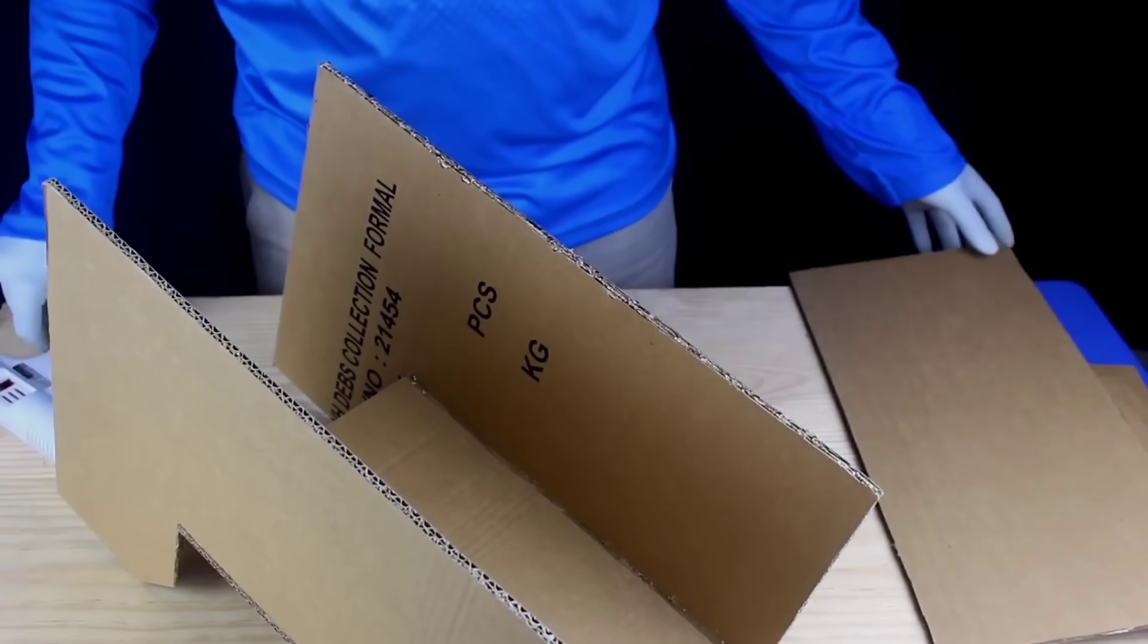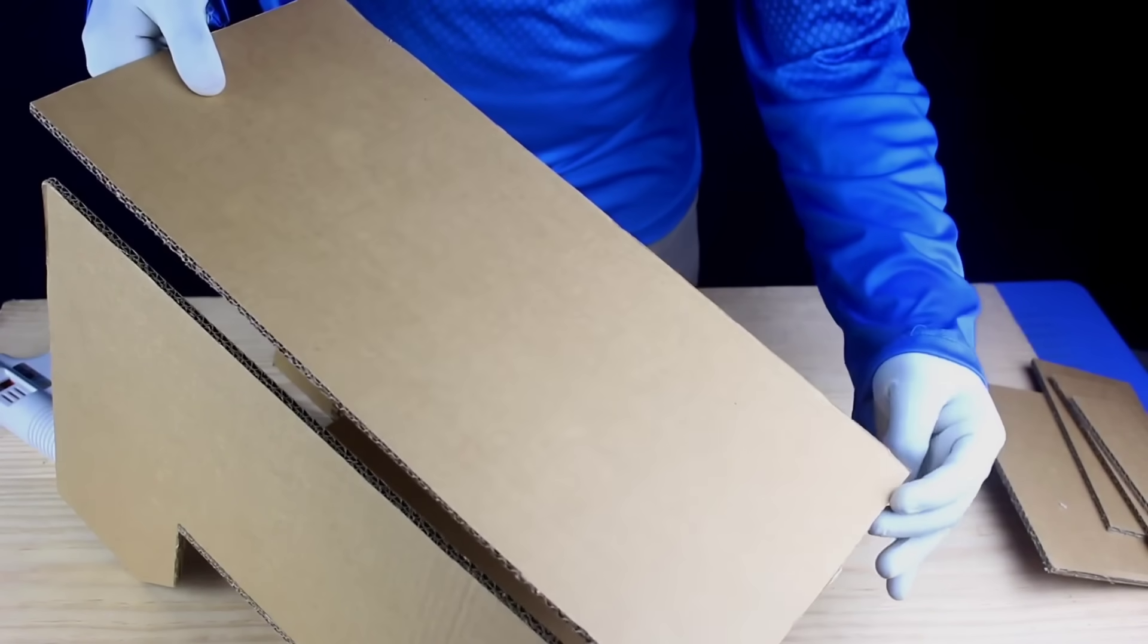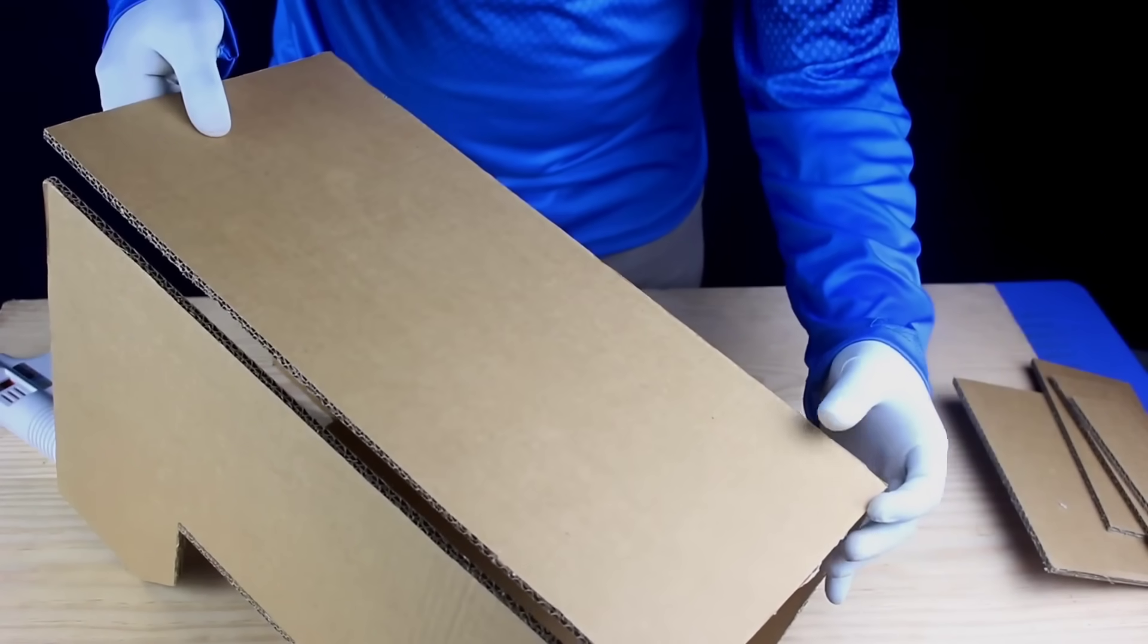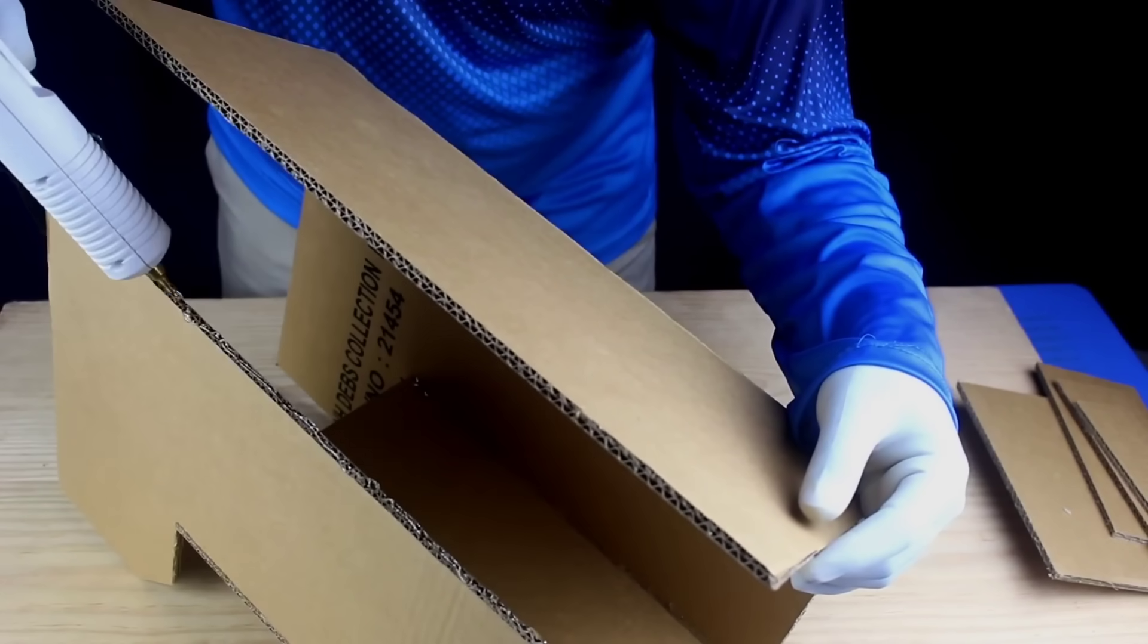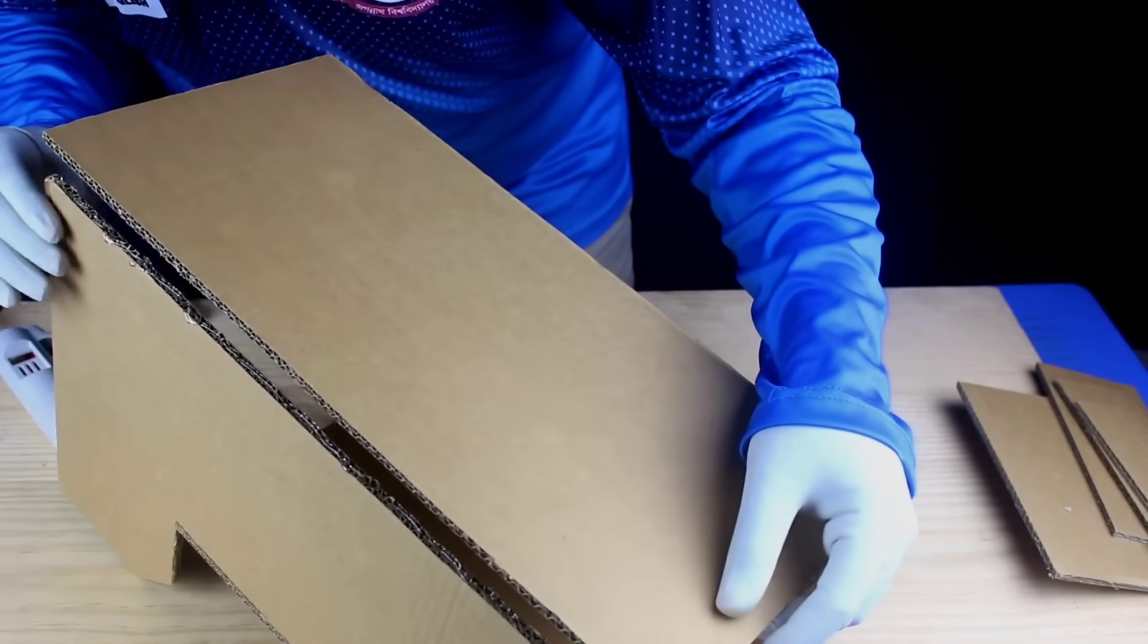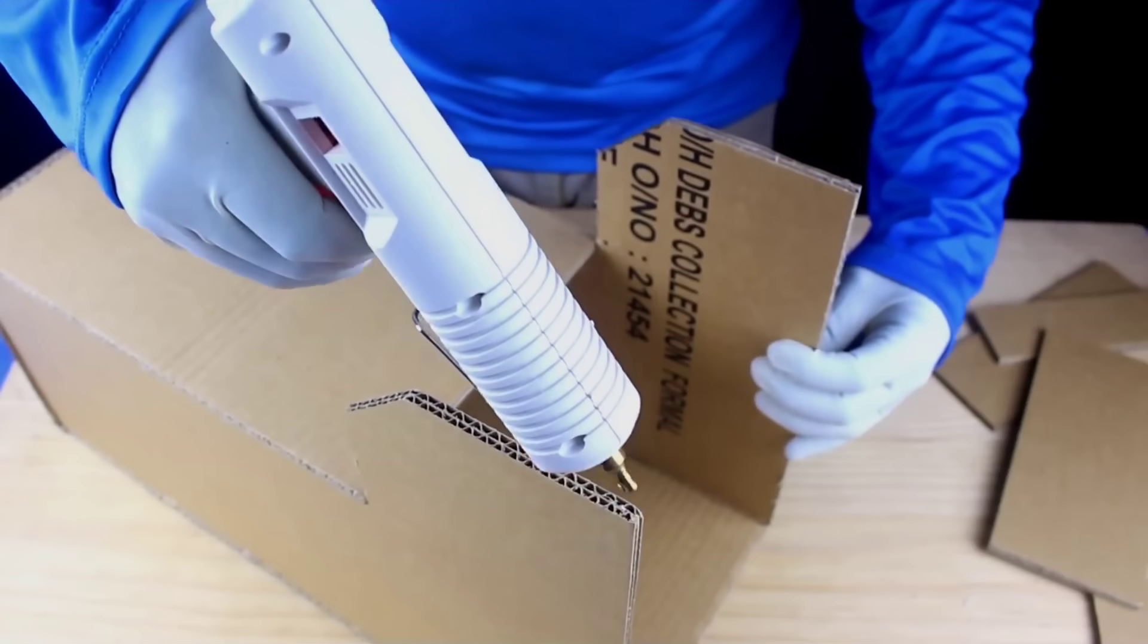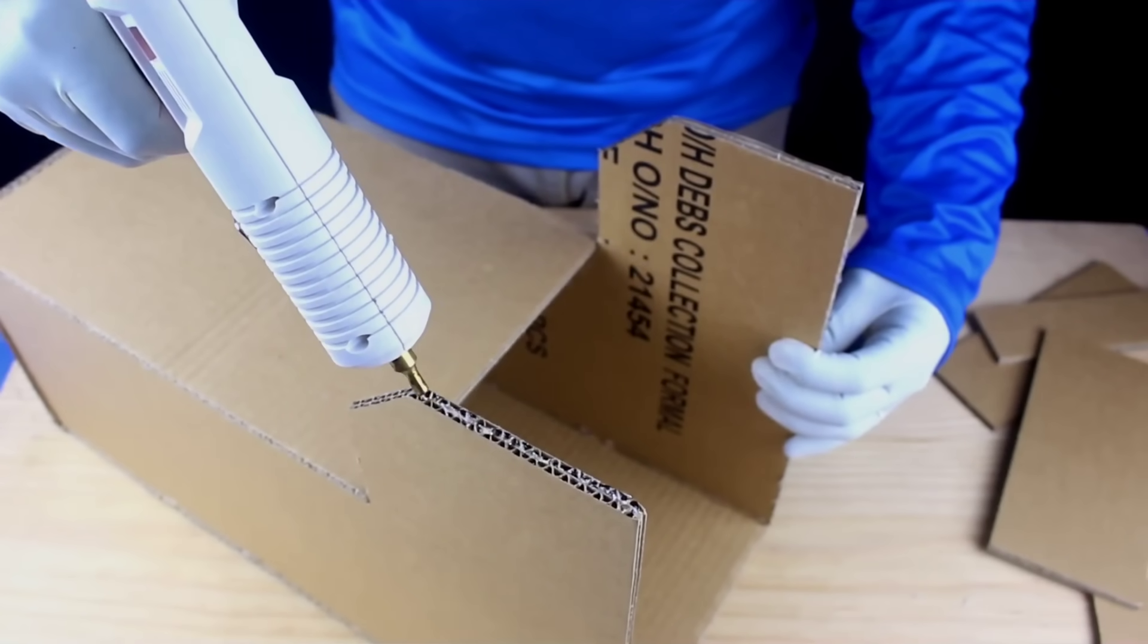Now comes the assembly part where everything starts to take its final shape. I used hot glue to carefully join all the parts of the dispenser's body together. Hot glue works great for cardboard-based DIY builds because it bonds quickly and holds the components firmly in place.